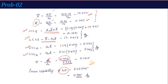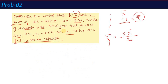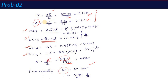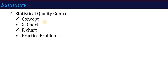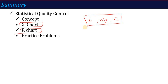So that is how you check and apply these control charts. In the next section, we will cover charts for attributes: P, NP, and C charts. The concept remains the same — determine if the process is under control or out of control — but the formulas will change. Keep practicing. Thank you.